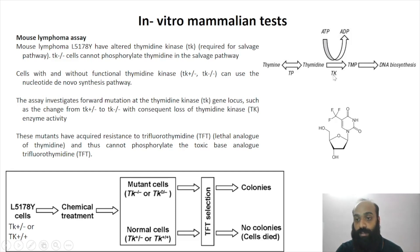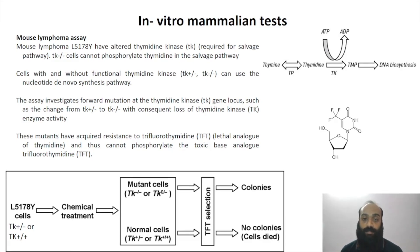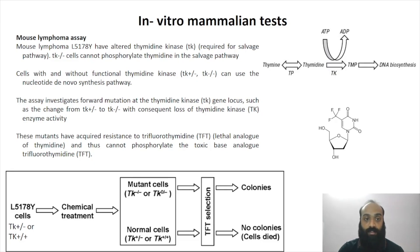If TK is faulty and non-functional, thymidine cannot be converted into TMP, so DNA cannot be synthesized via the salvage pathway. However, there is another pathway called the de novo pathway, by which cells can make their own DNA without requiring precursors — utilizing other biomolecules instead.